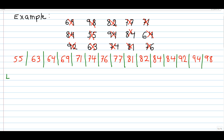I'm going to give each value a location number: location 1, location 2, location 3, 4, 5, 6, 7, 8, 9, 10, 11, 12, 13, 14, 15. So now I've marked from smallest to largest the location numbers.